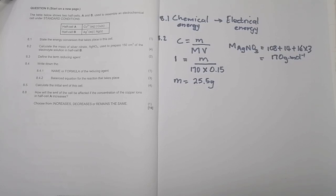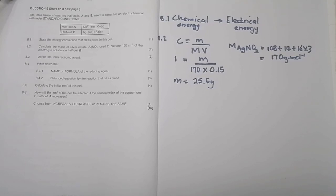The next question says: define the term reducing agent. Remember that a reducing agent is a substance that donates or loses electrons to another reactant. The reducing agent is the one that is being oxidized.